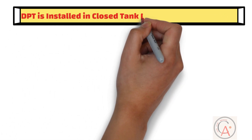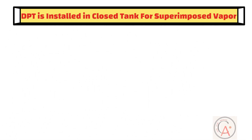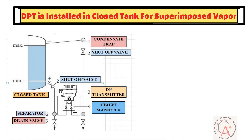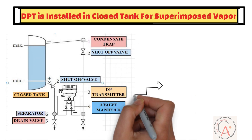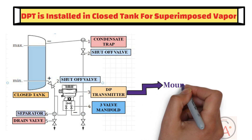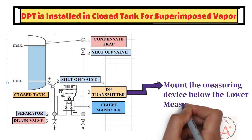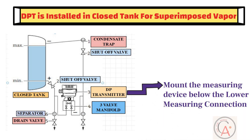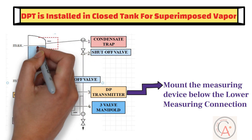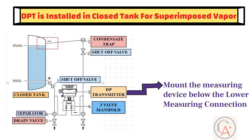Let's take the third scenario, when a DP transmitter is installed to measure level in a closed tank with superimposed vapor. As you can see from the diagram, in this condition, mount the measuring device below the lower measuring connection so that the impulse lines are always filled with liquid. The low pressure side needs to be connected above the maximum level. The purpose of the condensate trap is to ensure constant pressure on the low pressure side.